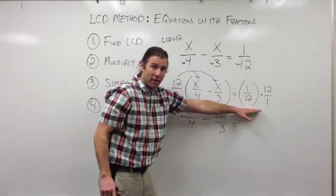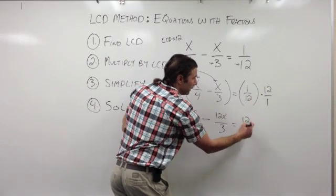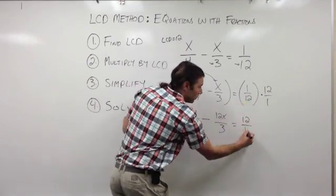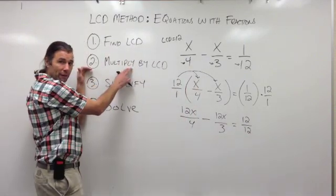Now over here on the right side of my equation, I will take 1 times 12 is 12, and in the denominator, 12 times 1 is 12. So I've done with step 2. I've multiplied all the terms by the LCD.